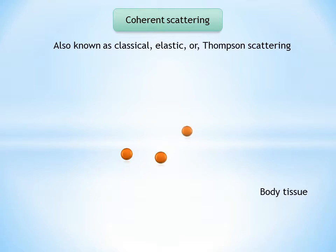Coherent scattering, it is also known as classical, elastic or Thomson scattering. It may occur when a low energy incident photon passes near an outer electron of an atom. The incident photon interacts with the electron by causing it to become momentarily excited at the same frequency as the incoming photon. The incident photon ceases to exist.